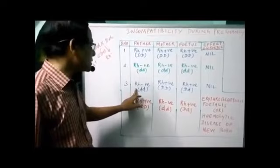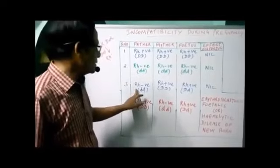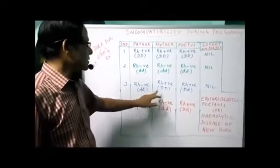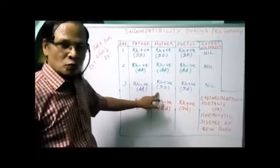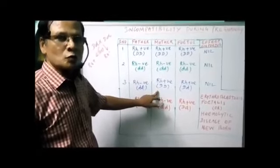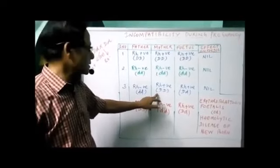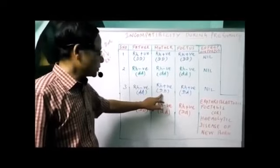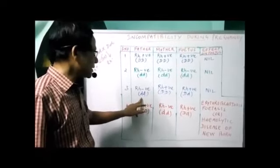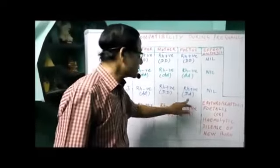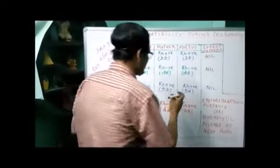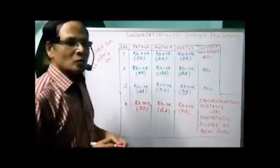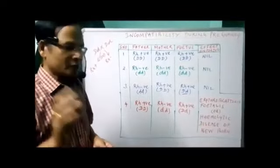The third case: father is Rh negative and mother is Rh positive, which is a dominant trait. As a general rule — just like crossing between tall and dwarf where you get tall offspring in monohybrid crosses following Mendelian inheritance — Rh positive is dominant over Rh negative. So the fetus is Rh positive. Here too the child will be born normally without any harmful effects.